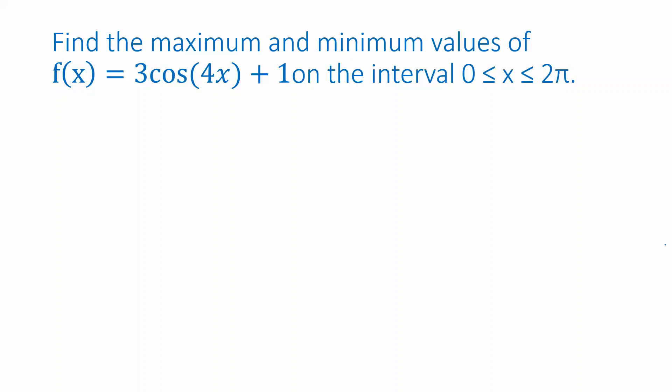All right, one more question. Find the maximum and minimum values of this function. f of x is 3 cosine of 4x plus 1. All right, well, the first thing we want to do is figure out what the graph of this function looks like. And this is a transformation of the cosine function. So let's start by remembering what cosine looks like. It's got a graph that looks roughly like this. So that's cosine of x.